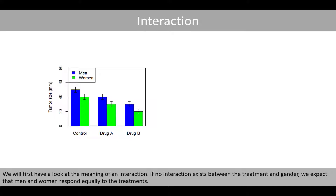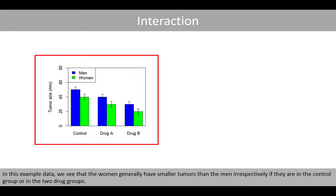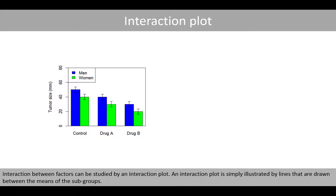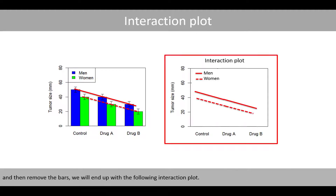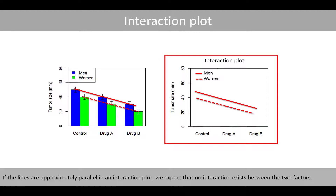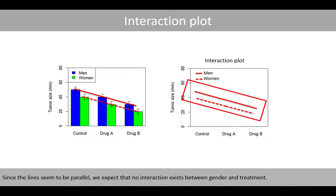We will first have a look at the meaning of an interaction. If no interaction exists between the treatment and gender, we expect that men and women respond equally to the treatments. In this example data, we see that the women generally have smaller tumors than the men, irrespectively if they are in a control group or in the two drug groups. Interaction between factors can be studied by an interaction plot, which is simply illustrated by lines drawn between the means of the subgroups. If the lines are approximately parallel in an interaction plot, we expect that no interaction exists between the two factors. Since the lines seem to be parallel, we expect that no interaction exists between gender and treatment.